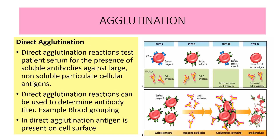Agglutination is of many types. First, we will discuss direct agglutination. Direct agglutination tests patient serum for the presence of soluble antibodies against large non-soluble particulate cellular antigens. Direct agglutination reaction can be used to determine the antibody titer. For example, in the case of blood grouping, the direct agglutination antigen is present on the cell surface.